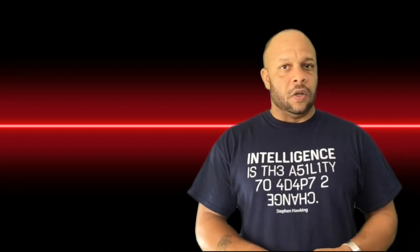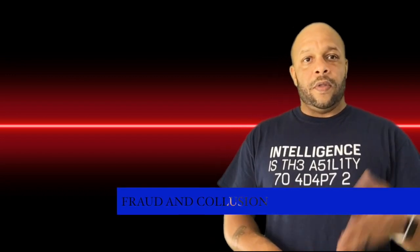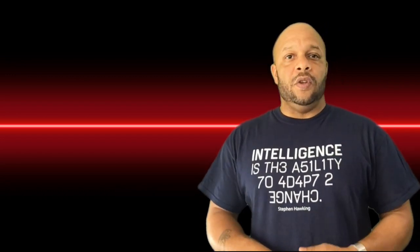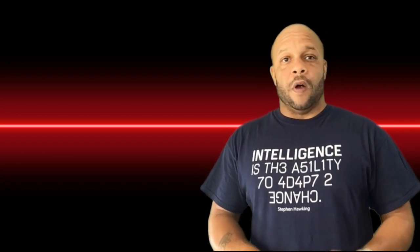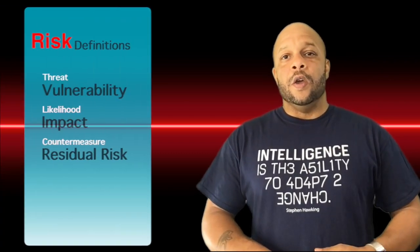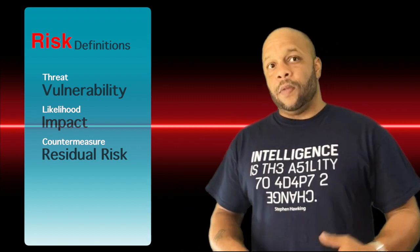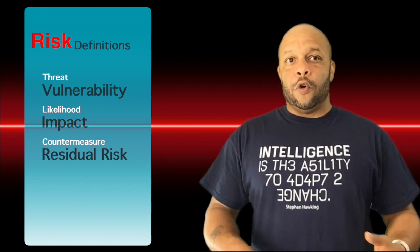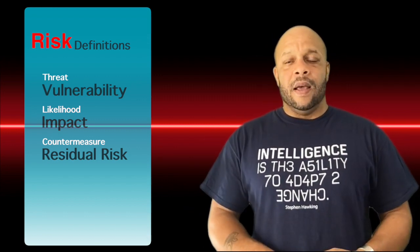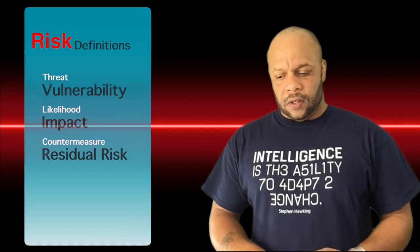Let's take a look at a few ways to defeat fraud and collusion. The key mitigation used to defeat fraud is job separation, or separation of duties. To defeat collusion, we use job rotation and mandatory vacations. You must also understand the core definitions of risk: threat, vulnerability, likelihood, impact, countermeasures, and residual risk.